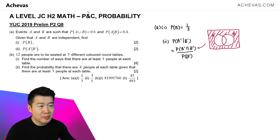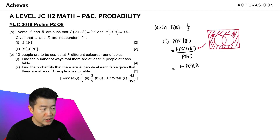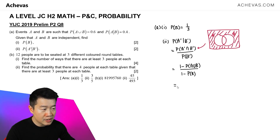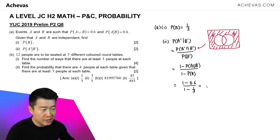The region outside A and outside B at the same time is calculated as 1, which is the entire Venn diagram, minus the region representing probability of A union B. So 1 minus probability of A union B equals probability of A prime intersect B prime. For the denominator, it is 1 minus probability of B. In the numerator, 1 minus 0.6, and in the denominator, 1 minus probability of B from part 1. This gives us the answer: 3 over 5.